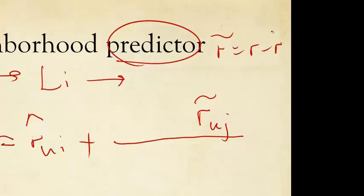r tilde is just r minus r hat. In this shifted space, depending on whether j is positively correlated with movie i or negatively correlated with movie i, it's going to give us some information.